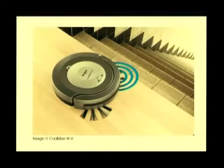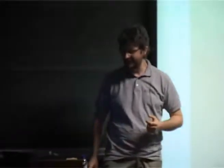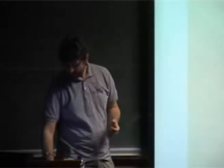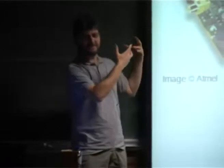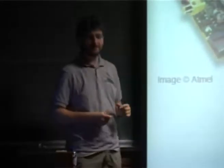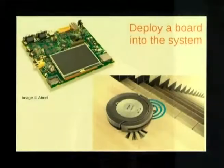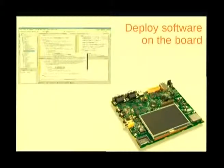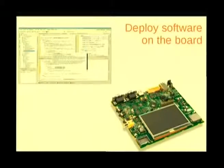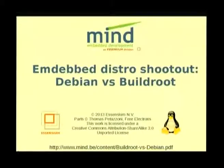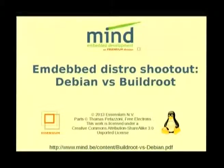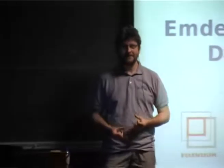We want to design a nice, nifty system like this independent vacuum cleaner robot. But to do that, we first have to develop the system on a development board and develop software on it — application software. So the question is: how do we get our application software on that development board and on the final board? Today I'm going to talk about distros to get your basic software, a Linux system, on your embedded targets.